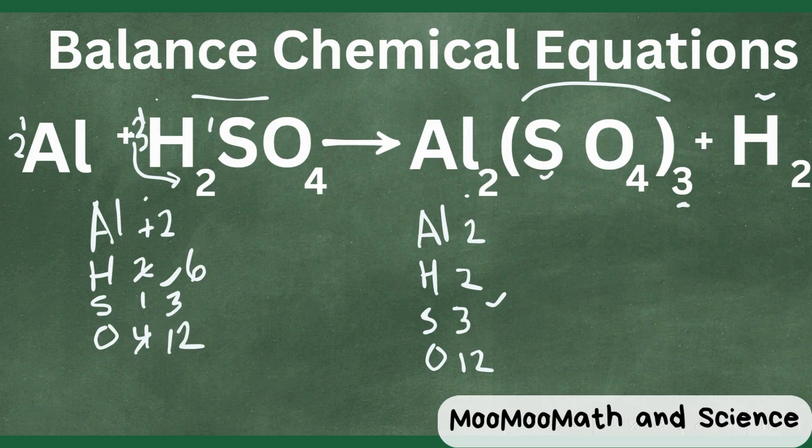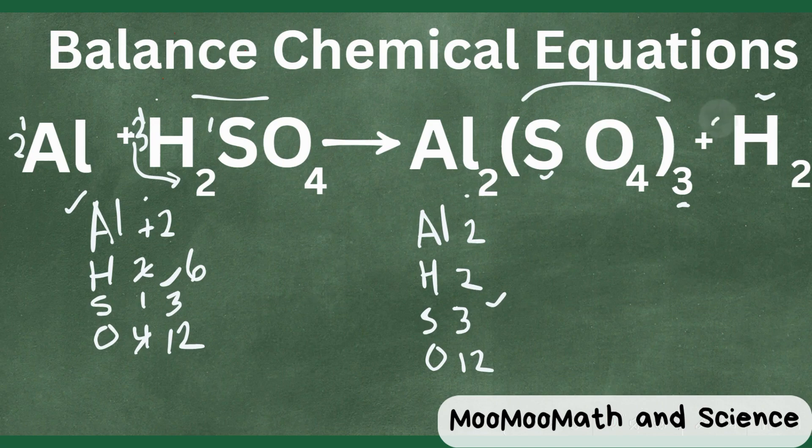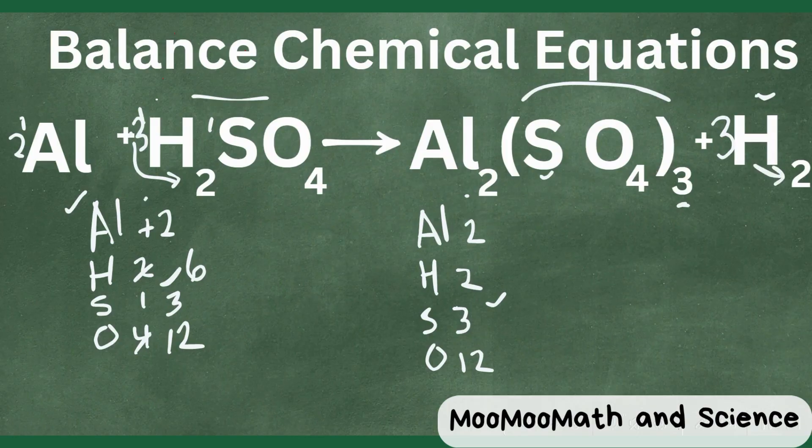Okay so now let's look and see what we have. It looks like the aluminums are balanced. The hydrogen we have six and two. So let's just change this to a three. Three times two is six. So I think we're going to be balanced.